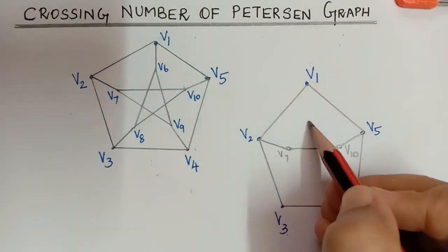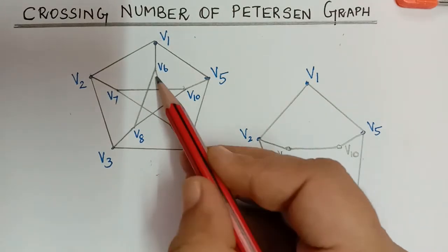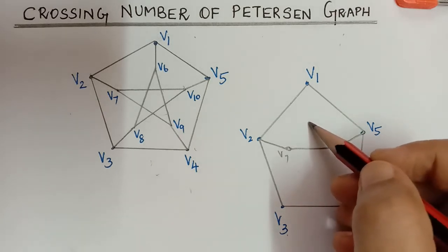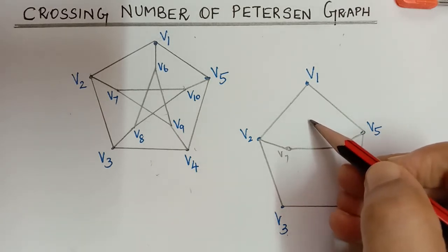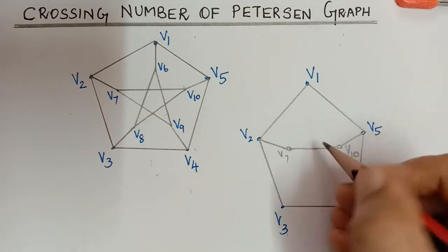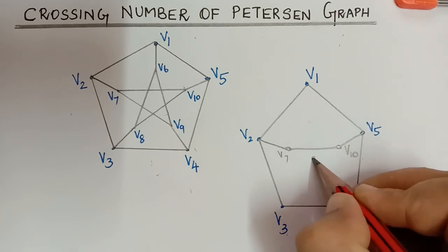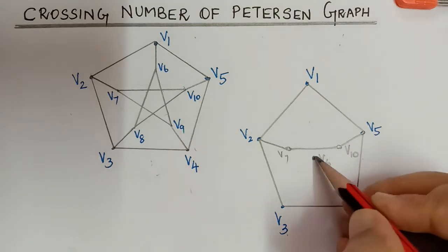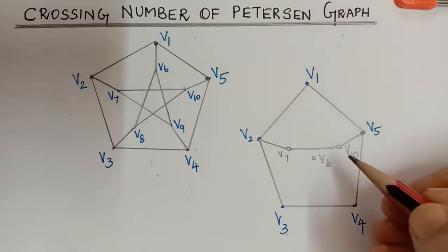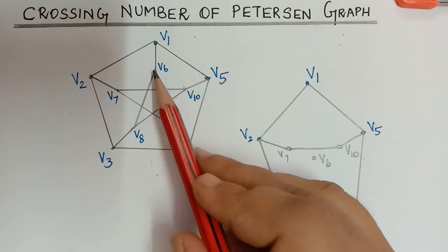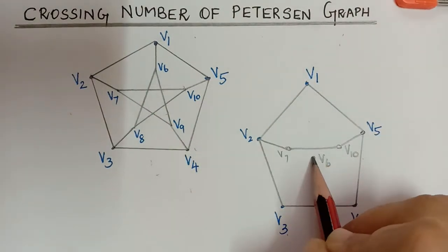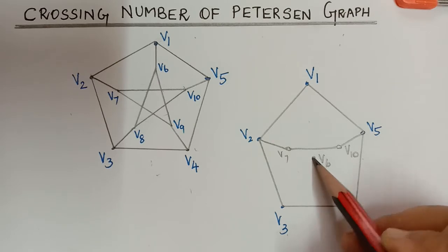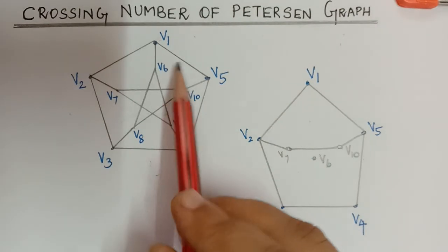Now there is a vertex v6. If we draw v6 in its original position and then draw the edge between v6 and v8, there will be a crossing. To avoid it, instead of drawing v6 there, we can place v6 at a different position, so that when we draw the lines there will be fewer crossings.